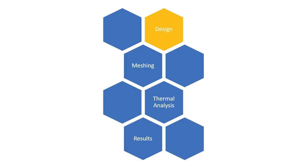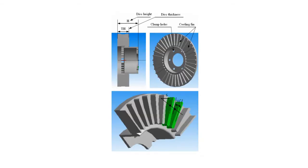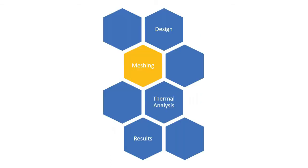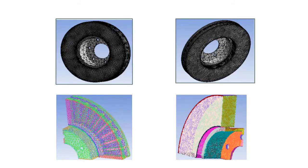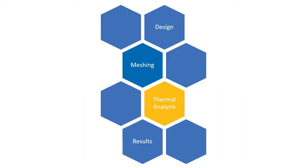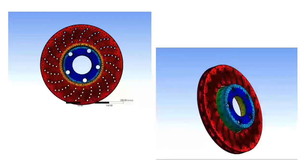I am Kaustub Pandit, and I will be elaborating on the blueprint of our project. Our project is divided into 3 phases. Phase 1: where the design was decided — based on research papers, we came up with a ventilated disk with holes drilled in it for better brake efficiency and cooling. Phase 2: meshing, where the design model is meshed into finite elements for analysis. Phase 3: the meshed model is imported into ANSYS for steady-state thermal analysis, from which we obtain the desired results.